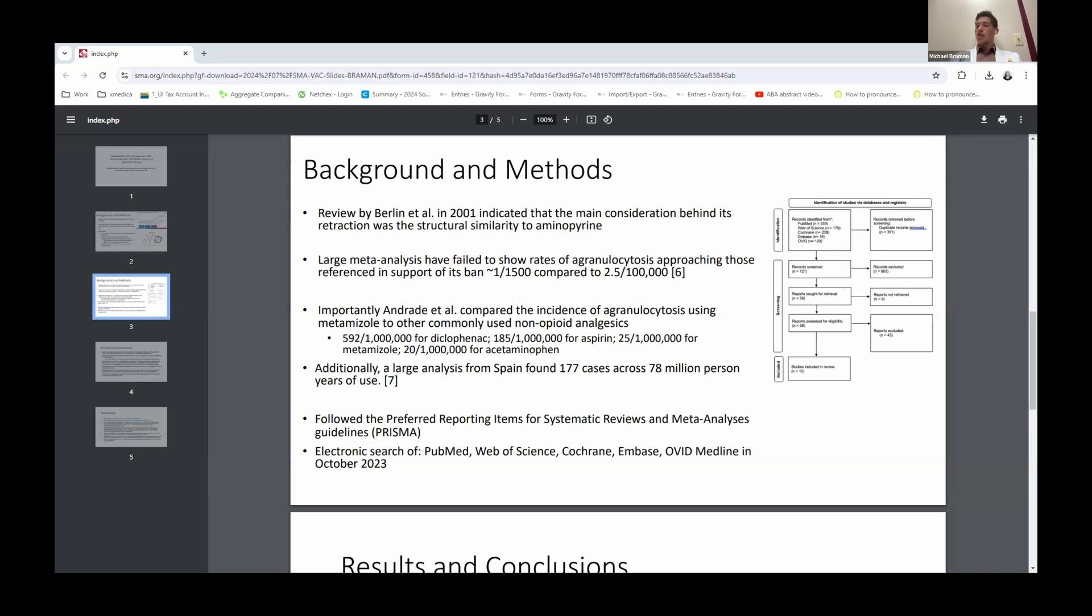Really, our understanding of agranulocytosis then might not have been appropriate. Whether or not this is a viable option, it's being used efficaciously in Romania as I described, in other places, South America is also very commonly used. A large analysis in Spain also found only 177 cases across 78 million person-years of use. So this is a cheap drug that's non-addictive that is highly efficacious in many countries across the world but we can't use in the United States. The question that we asked is, is it effective? We think maybe there's less of a concern about agranulocytosis, but is it actually efficacious in pain? That's what we looked at in the setting of orthopedic surgery. If we can move to the next slide please.